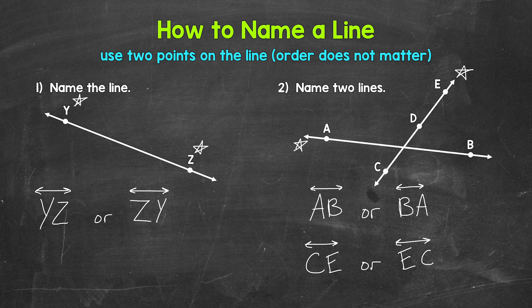And again, just to be clear, we can also use the points D and C or D and E in order to name this line as well. So for number two, we named two lines.